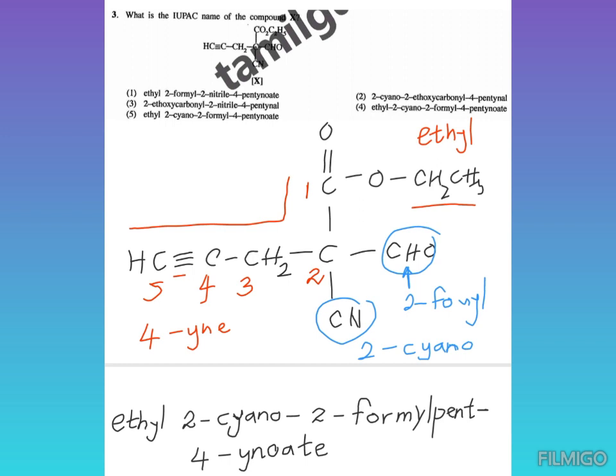We'll find which answer contains this name. If we take the first one, we can't take that because it says nitrile, not cyano. Second one: 2-cyano - no, because it should start with ethyl. Third one: 2-epoxy - no. Fourth one: ethyl 2-cyano - but you can see there is a small dash between ethyl and 2-cyano. There should not be any dash. So the answer is the fifth answer: ethyl 2-cyano-2-formyl-4-pentynoate.